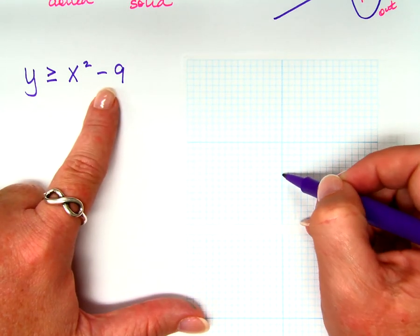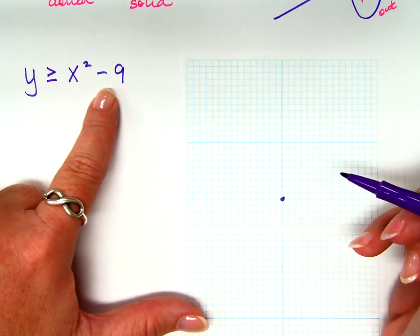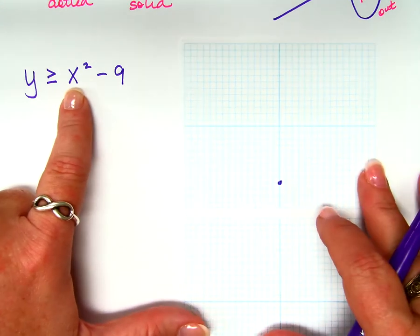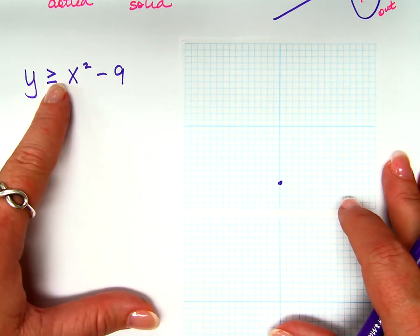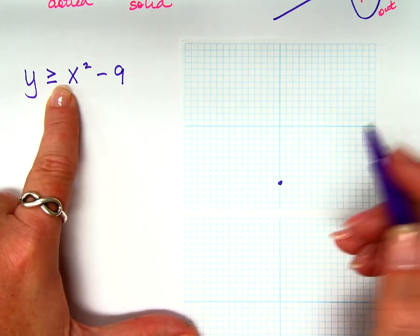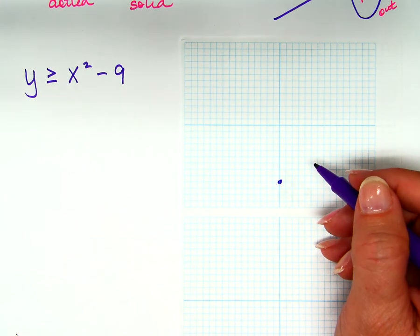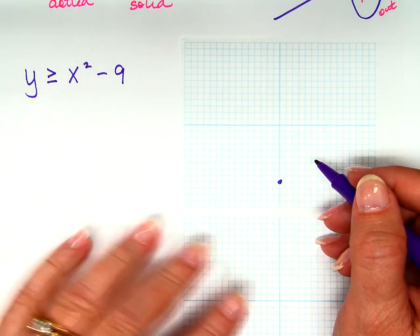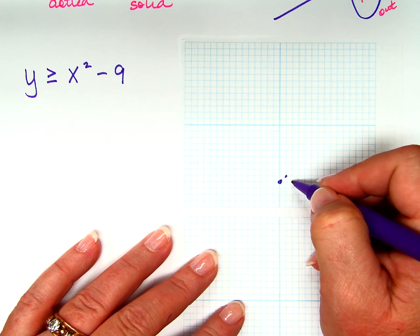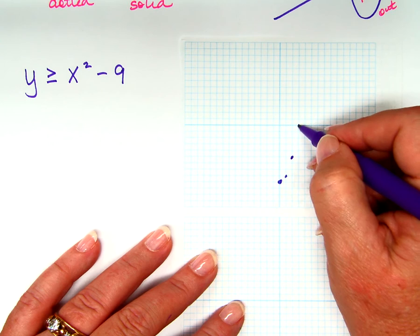So down 9 — that's my new vertex. Is it parent function shape? There's no multiplier, so it is parent function shape. Does it open up or down? It opens up because it's positive. So I'm going to go over 1 up 1, over 2 up 4, and over 3 up 9. Those numbers come from 1 squared, 2 squared, and 3 squared.